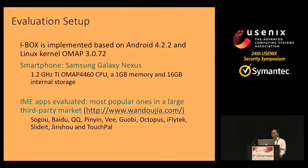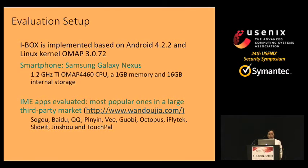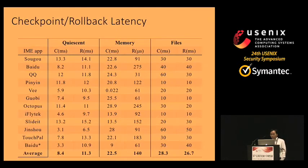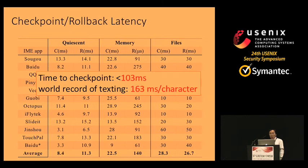We conducted a set of evaluations to assess the effectiveness and efficiency of IBOX using popular IME apps from a large third-party market. We first evaluated checkpoint and rollback latency, showing that the time to perform a checkpoint is less than 103 milliseconds. Notably, the world record for texting is around 163 milliseconds per character, meaning IBOX introduces low delay during input.